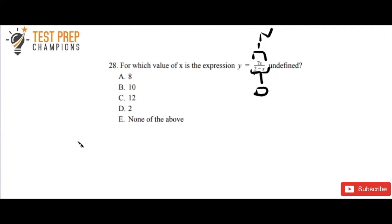So we want to take our denominator, set it equal to zero. So here's what we do. We take 2 minus x, and we set that equal to zero.